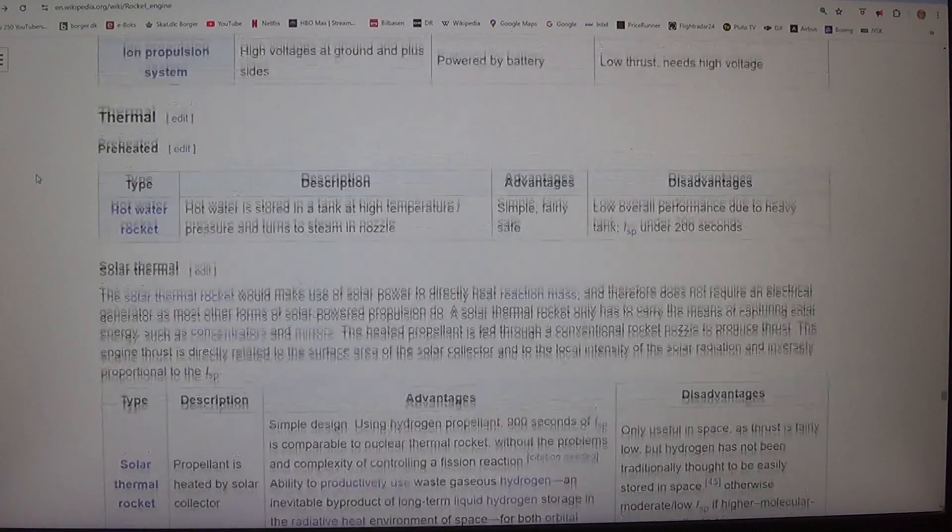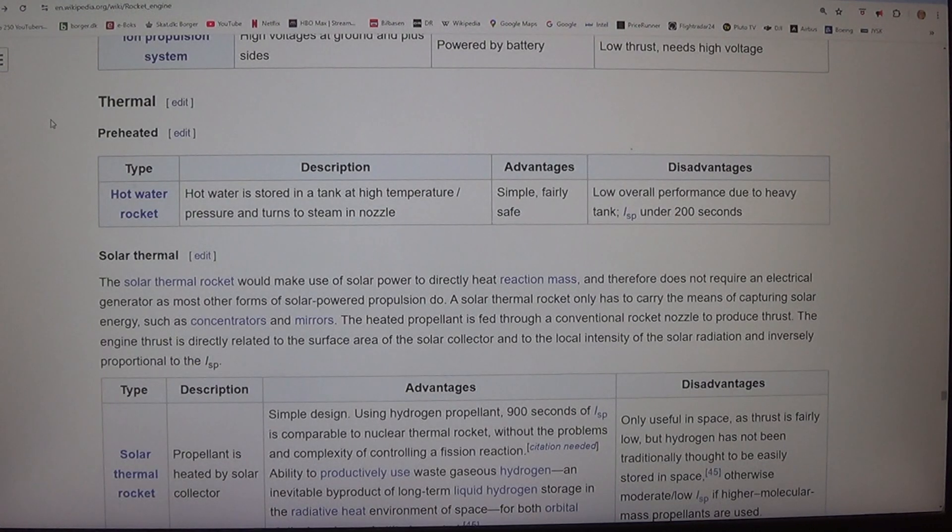Thermal propulsion. Hot water rocket - hot water is stored in a tank at high temperature/pressure and turns to steam in nozzle. Simple. Fairly safe. Disadvantages: Low overall performance due to heavy tank. ISP under 200 seconds.